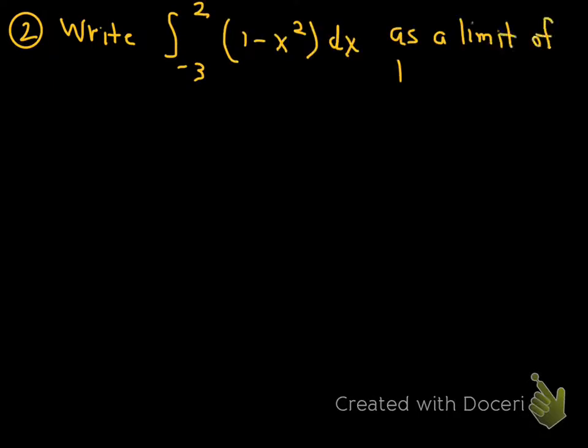Here's problem number 2. This time, a different integral. We have the integral from negative 3 to 2 of 1 minus x squared dx. Write that as the limit of Riemann sums. Okay. Here's the first step. I just put a check mark there. Do you remember what it is? First step is find delta x. Do so by going b minus a over n.